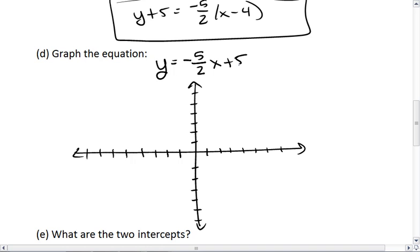I already know that my y-intercept is 5. This means I have an ordered pair of 0 comma 5 since my y-intercept is the value of y when x is 0. As I go up, I'll find 1, 2, 3, 4, 5, and that gives me my point 0 comma 5.